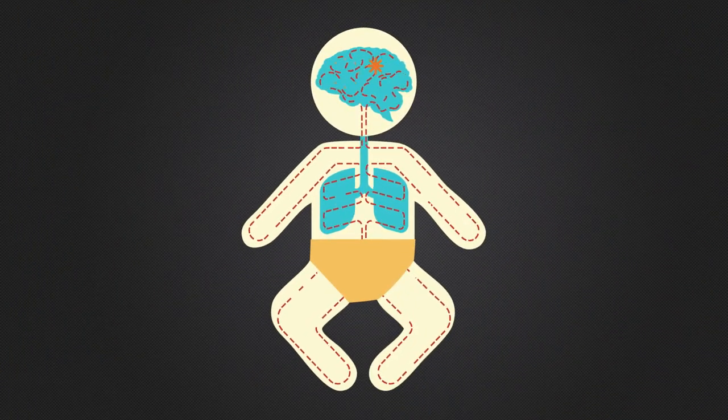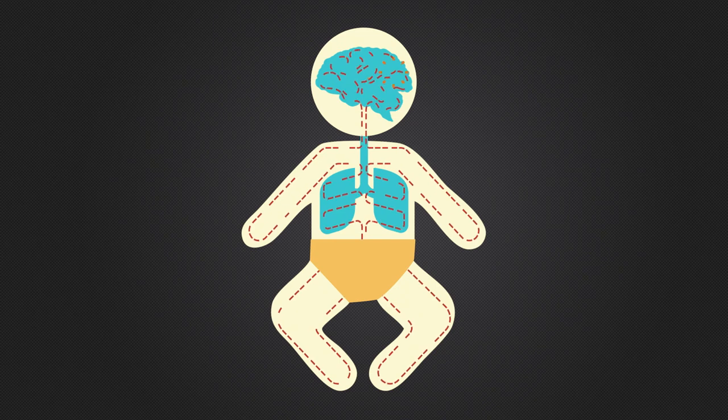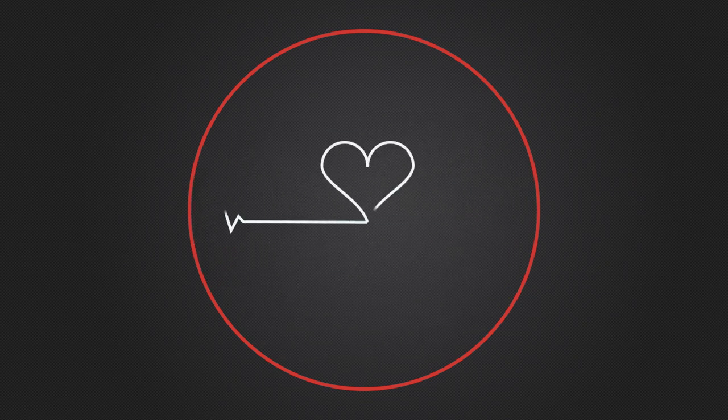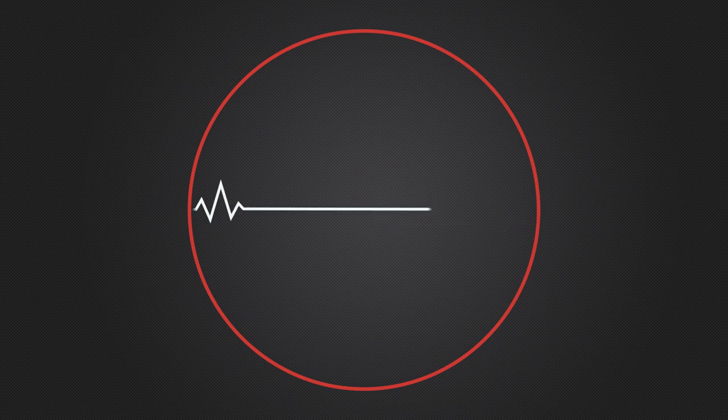As psychosine continues to build up in the nerve tissue and progressively destroys the myelin, disabilities increase. The brain becomes unable to control the body, including motion, vision, speech, and critical life functions, eventually leading to death.